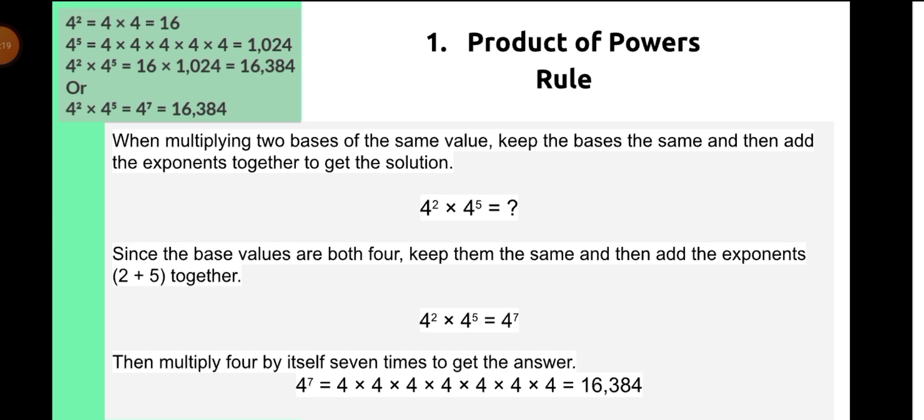The first one is what we call the product of powers rule. When we multiply two bases of the same value, we keep the base the same and then add the exponents together to get the solution. For example, 4 raised to the power of 2 times 4 raised to the power of 5: since the base values are both 4, we keep the base and add the exponents 2 plus 5, giving us 4 raised to the power of 7. Then we multiply 4 by itself 7 times to get 16,384.